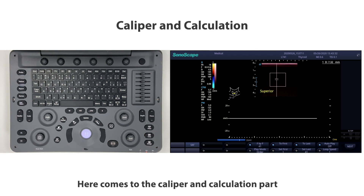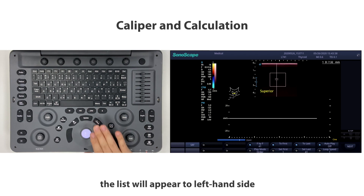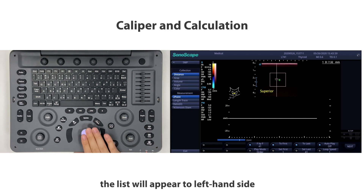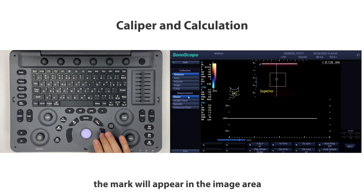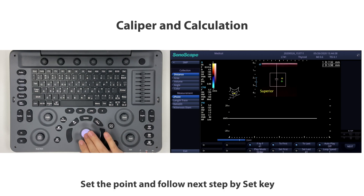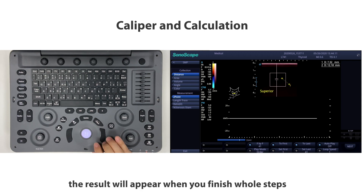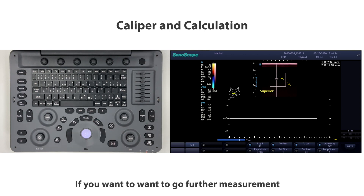For the caliper and calculation section: choose Caliper to do basic measurements — a list will appear on the left side. Click the measurement you need, the mark will appear in the image area. Set the point and follow the next step using the Set key. The result will appear when you finish all steps.